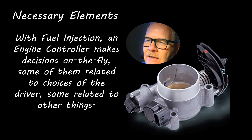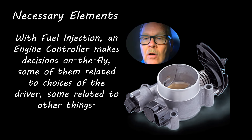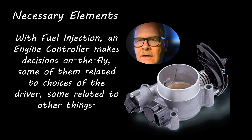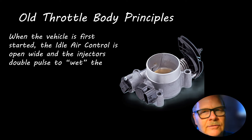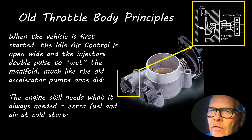Some throttle bodies had a basic cable setup that would open the throttle plate. The engine controller has to make decisions on the fly about all kinds of stuff — driver inputs, engine coolant, mass airflow — and it's constantly doing fine tuning on the fuel trim based on oxygen sensor input. When the vehicle first starts, idle air control opens wide and the injectors double-pulse to wet the manifold — that's kind of like what the accelerator pump did on your old carburetor.